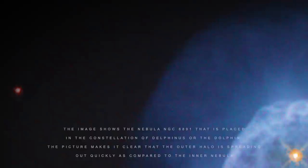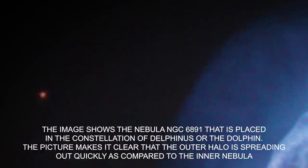The image shows the nebula NGC-6891 that is placed in the constellation of Delphinus, or the dolphin. The picture makes it clear that the outer halo is spreading out quickly as compared to the inner nebula.